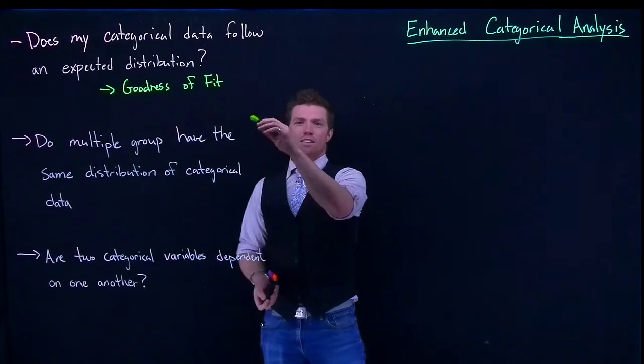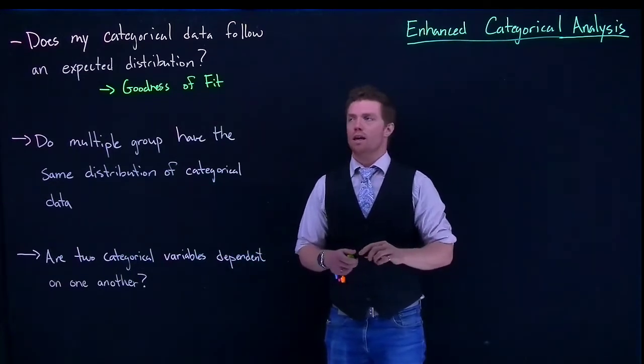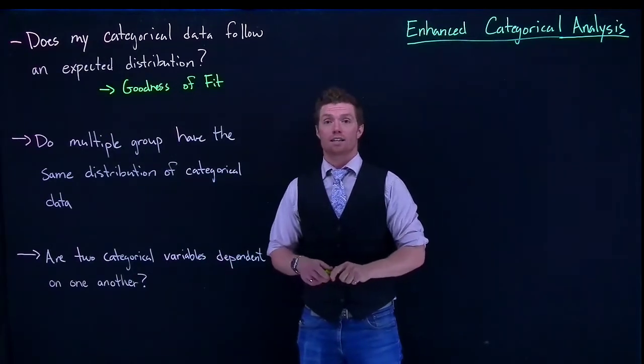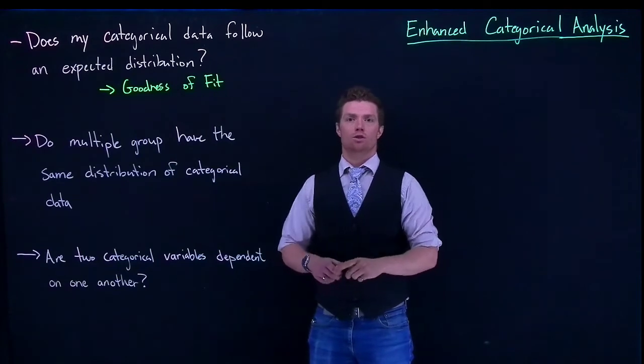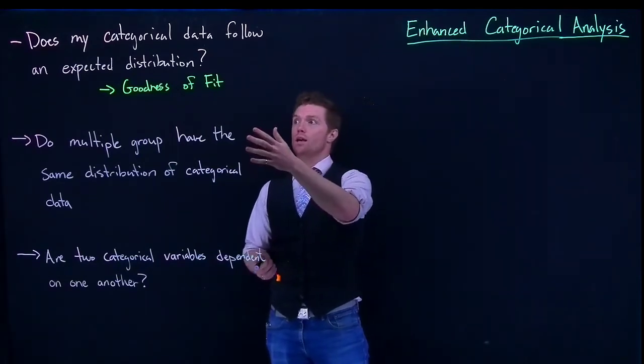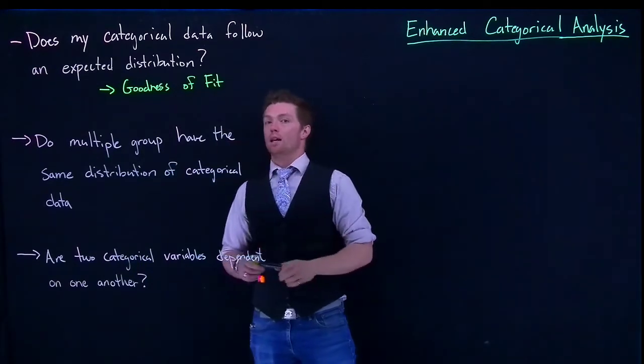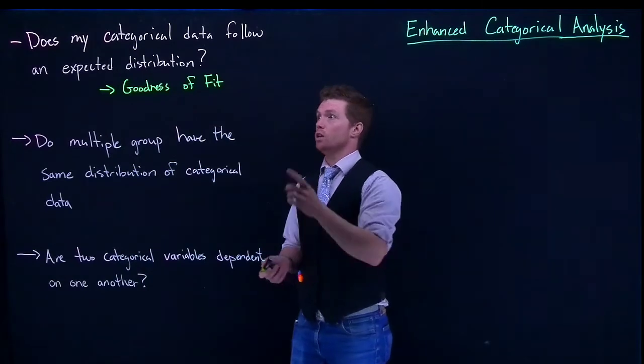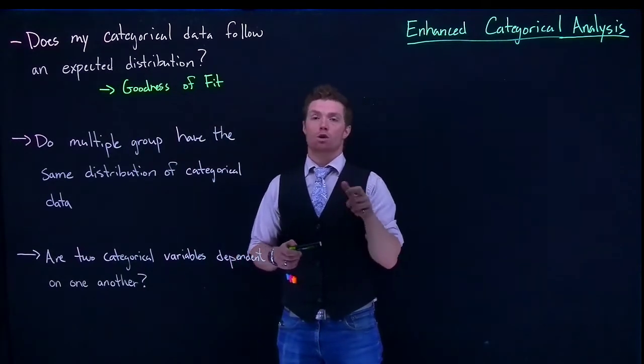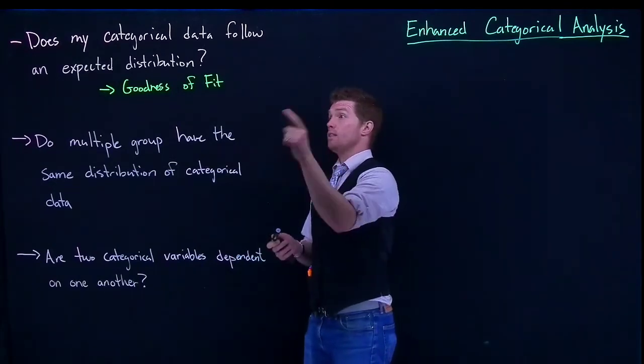That's the first one we can do. We actually have kind of done this one. When we did one-sample proportions testing, we actually did this, but we were just looking at two levels of classification. This allows us to look at many more levels of classification. We can look at an entire distribution instead of just if one proportion was equal to a specific value.